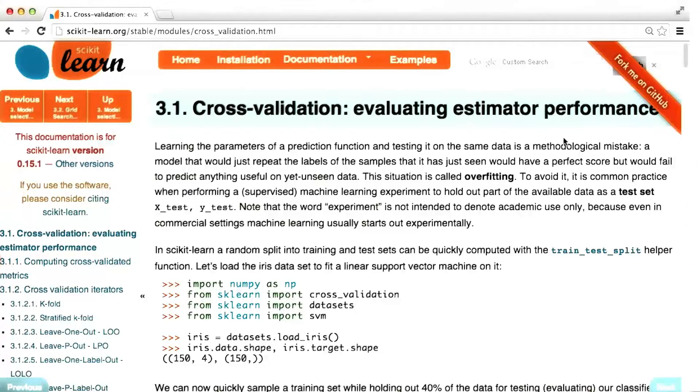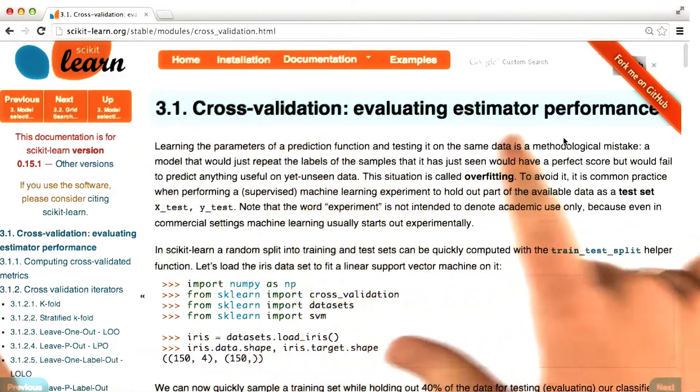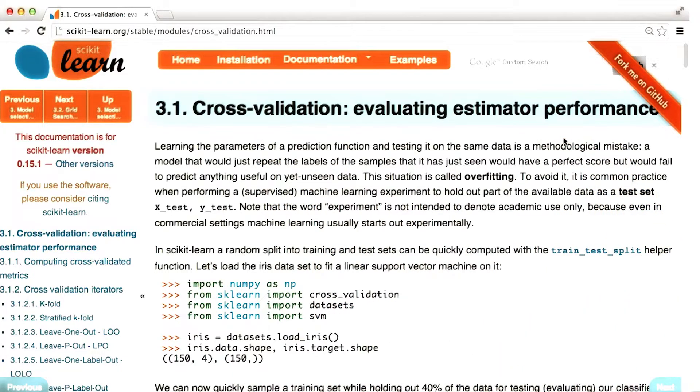If we want to do a training testing split in sklearn, we want to look for a group of functions that fall under the general title cross validation. In this documentation page, they have a little bit of a warm up, the idea of cross validation, why you might do it. But these are things that you're already familiar with because we've talked about them a lot in this class.